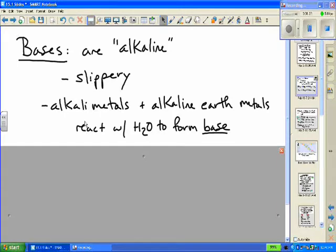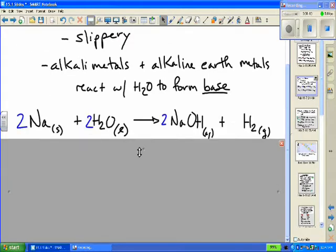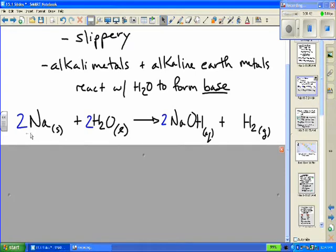The alkaline metals and alkaline earth metals are named after bases because when they react with water, they form a base. The example of this is sodium, an alkaline metal thrown into water, will produce sodium hydroxide and, of course, hydrogen gas, and that's the explosion you see when the hydrogen is ignited.